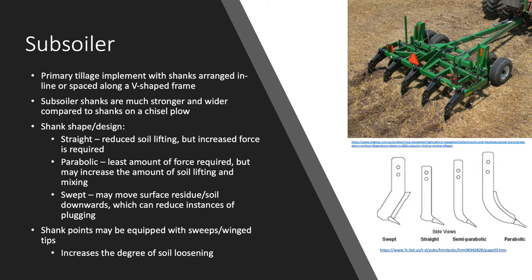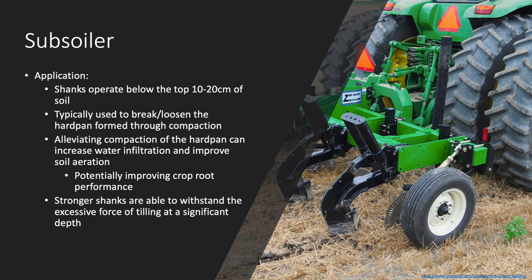The addition of sweeps or wing tips slightly increases the amount of force required to pull the subsoiler, but also increases the volume of soil disturbed per shank, which can allow for a reduction in the number of shanks equipped while still maintaining a desired level of soil disturbance. Subsoilers typically operate at depths below 10-20 cm to break and loosen the hardpan formed through compaction. Alleviating compaction within the hardpan and subsurface layers can help to improve water infiltration and soil aeration, which subsequently may also improve crop root performance. Additionally, maintaining adequate water infiltration may also reduce the amount of potential surface runoff and in turn can reduce the risk of erosion. The stronger design of shanks allows them to withstand the excessive force of tilling at significant depth, which makes them better suited for such applications in comparison to a chisel plow.